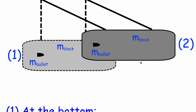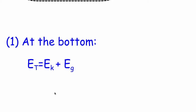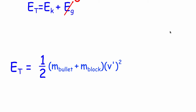Here's the situation: as the bullet goes into the block of wood but the block has not started to move up yet, we're going to call that position one. When the bullet is in the block of wood and it's been raised up to its maximum height, we're going to call that position two. At position one, the energies we can have are kinetic energy and gravitational potential energy. Because it's at the bottom and can't go any lower, the gravitational potential energy is zero, so all of the energy is kinetic energy.